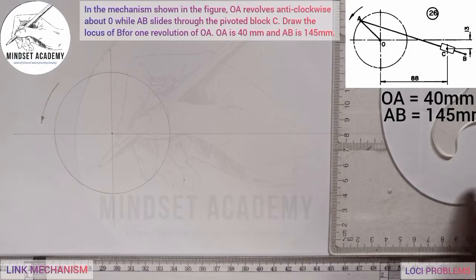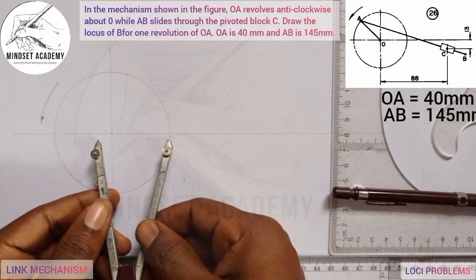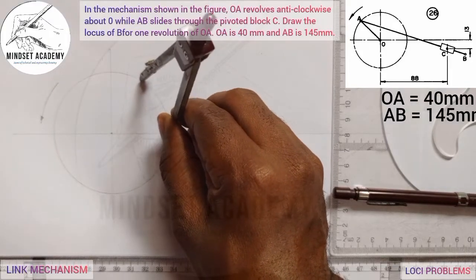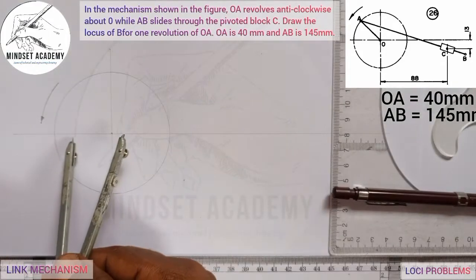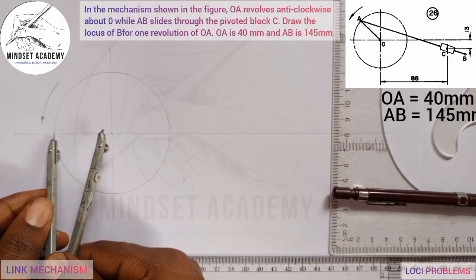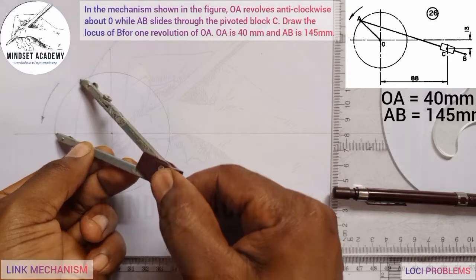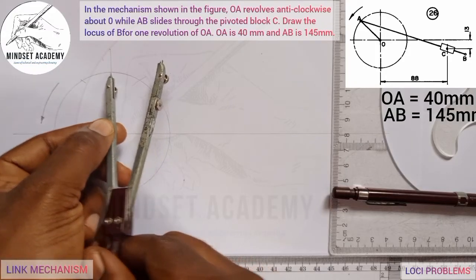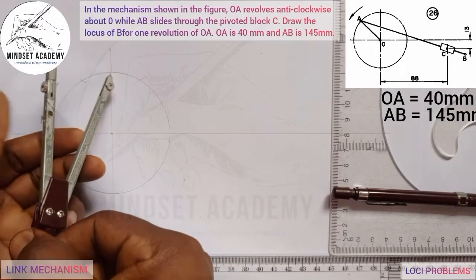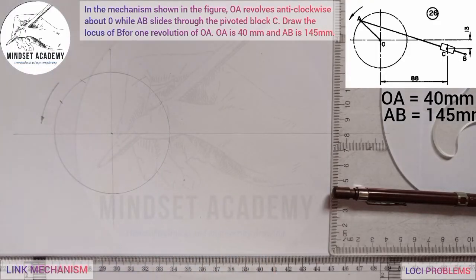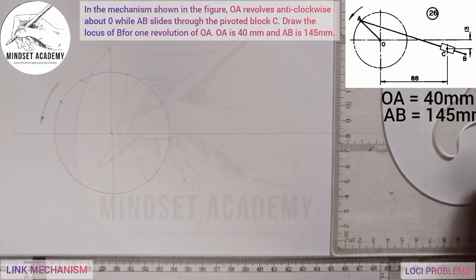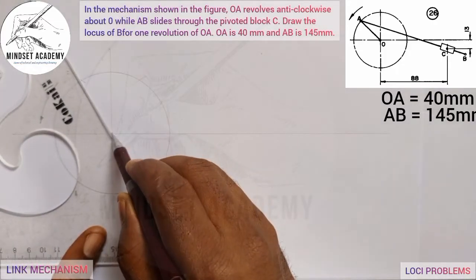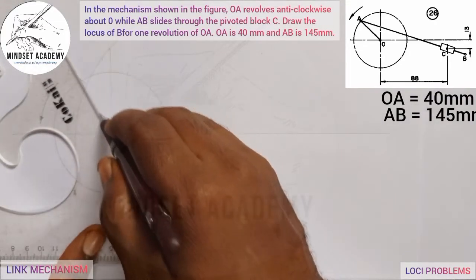Take your compass with the same radius used to draw the crank. Cut up here, come to the other point, place it and cut here too — on both sides. Where they meet, draw a line passing through the center. Take the center as your reference point so each of those lines passes through that center point.